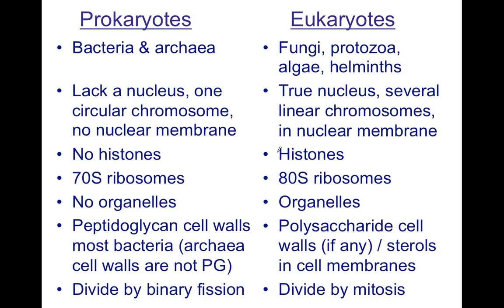The 80S ribosome is a combination of a 30S and a 40S, which give that number — we are going to explain that in the future. And prokaryotes do not have organelles.